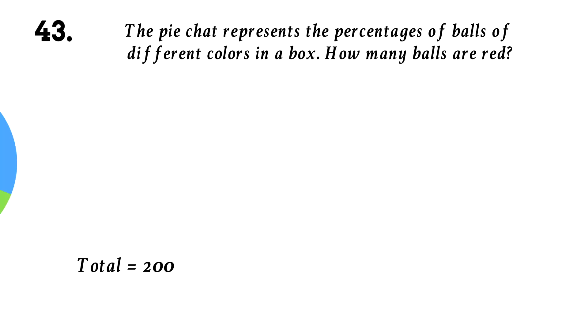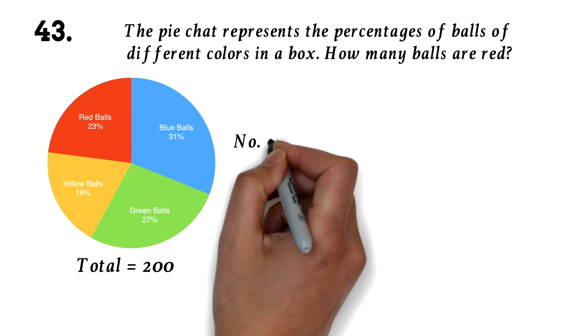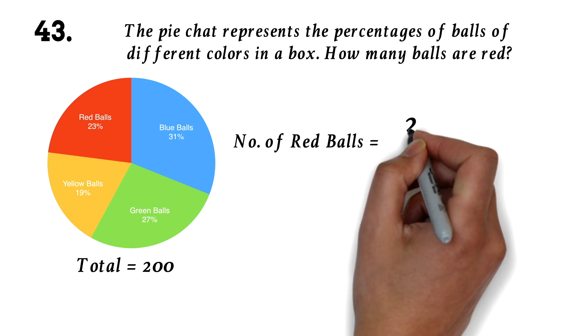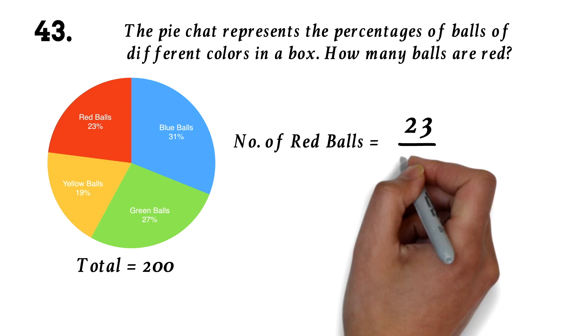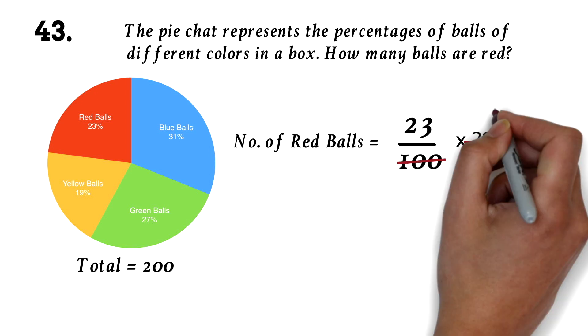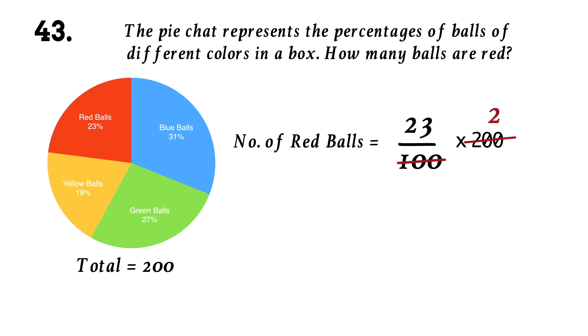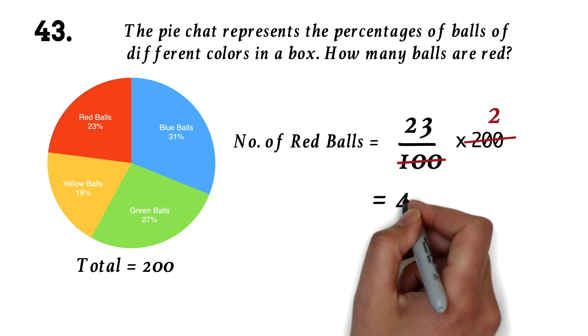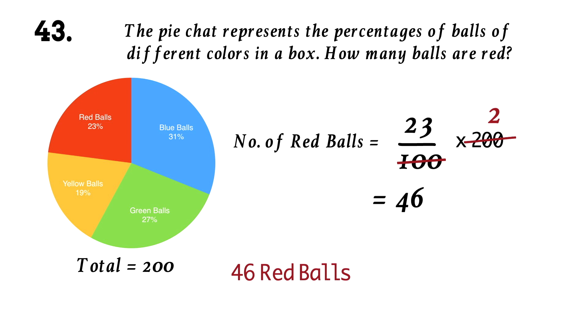Question 43. How many balls are red? This is the second common kind of pie chart question. Here, you are given percentages and asked to find the number or value. To find the value of red balls, you will have 23 over 100 times 200, which is the total number of balls. 200 divided by 100 is 2. 2 times 23 is 46. So there are 46 red balls.